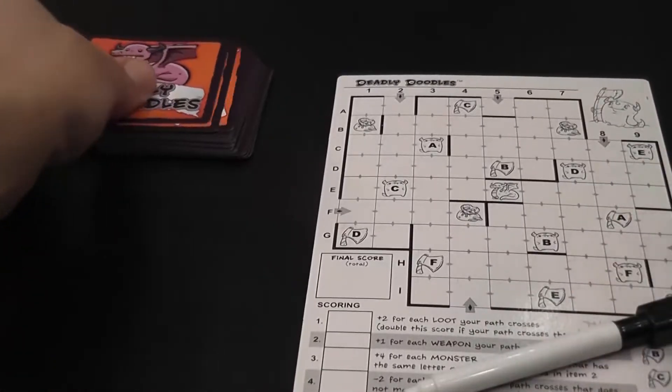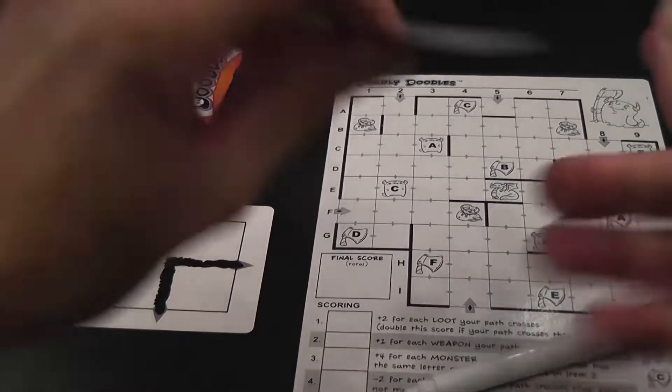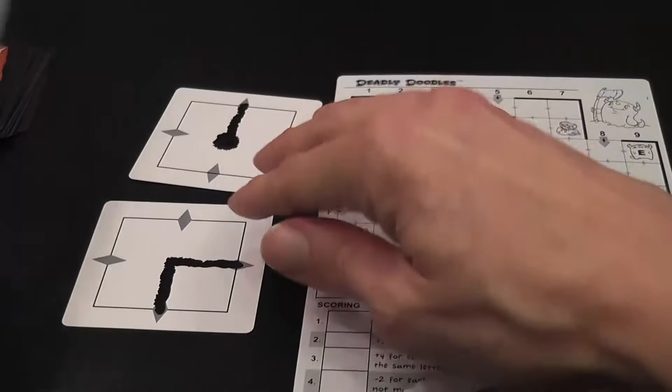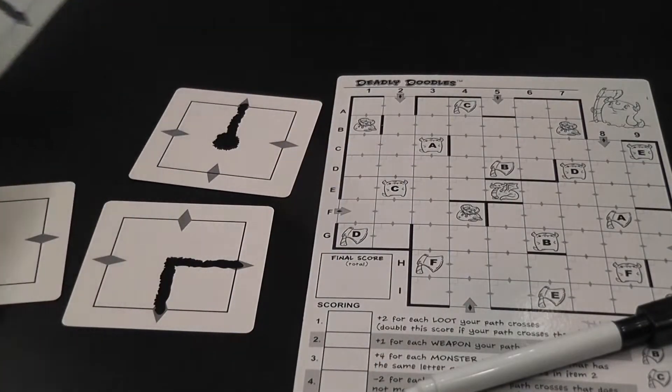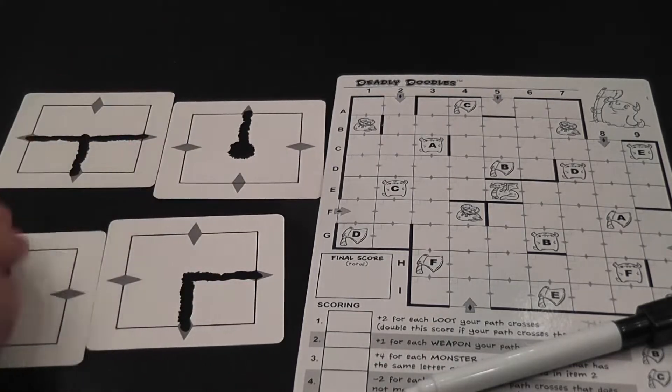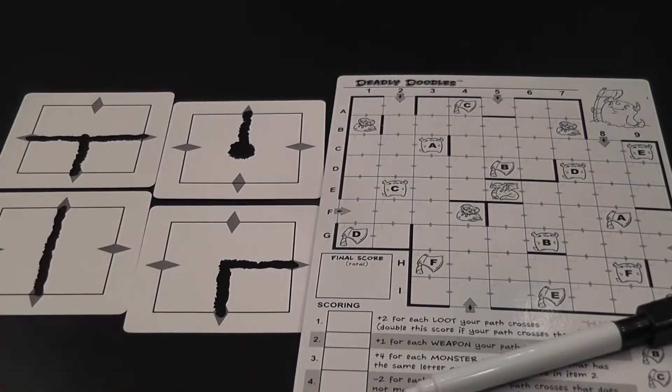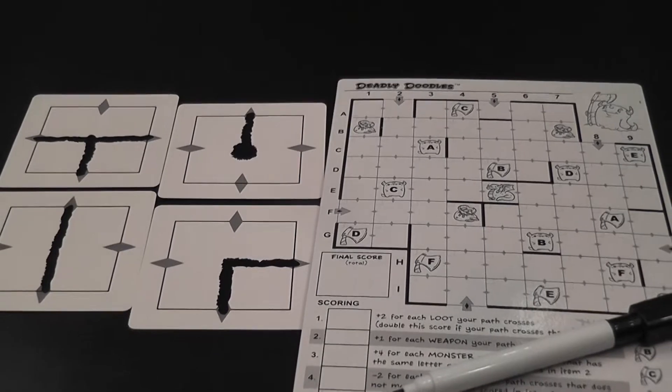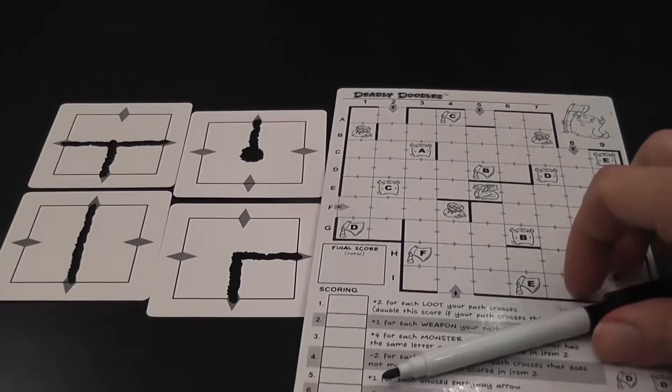At the beginning of each turn, you draw four and you place them in a location where everybody can see them and then people will have to, if they can, will have to draw these shapes, these pathways on their board.